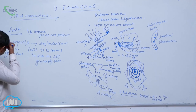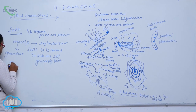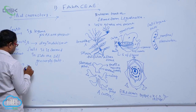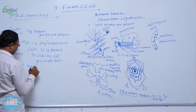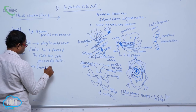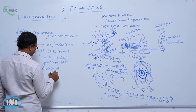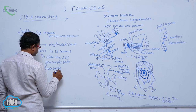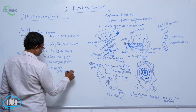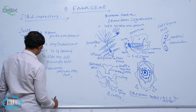After that, the seed. The seed is non-endospermic. The cotyledon stores food material in the form of proteins.